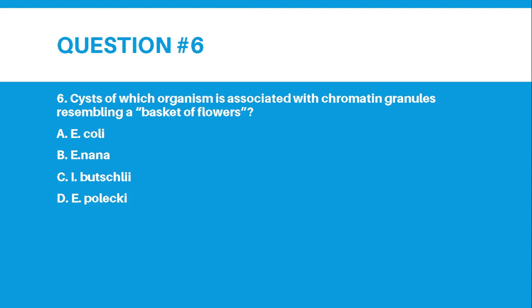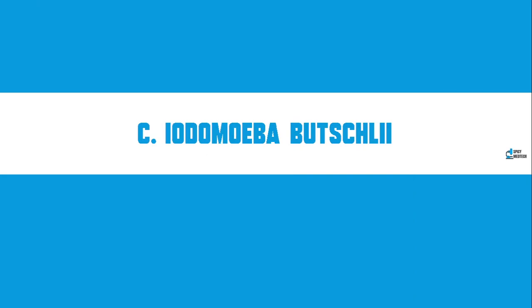Number 6. Cysts of which organism are associated with chromatin granules resembling a basket of flowers? A, E. coli; B, E. nana; C, Iodamoeba butschlii; or D, E. polecki. And the answer for number 6 is letter C, Iodamoeba butschlii.